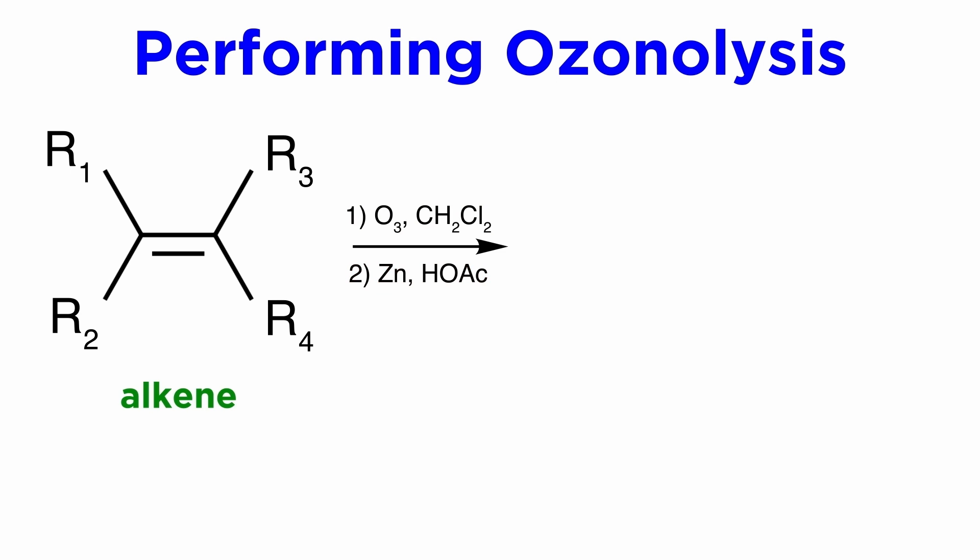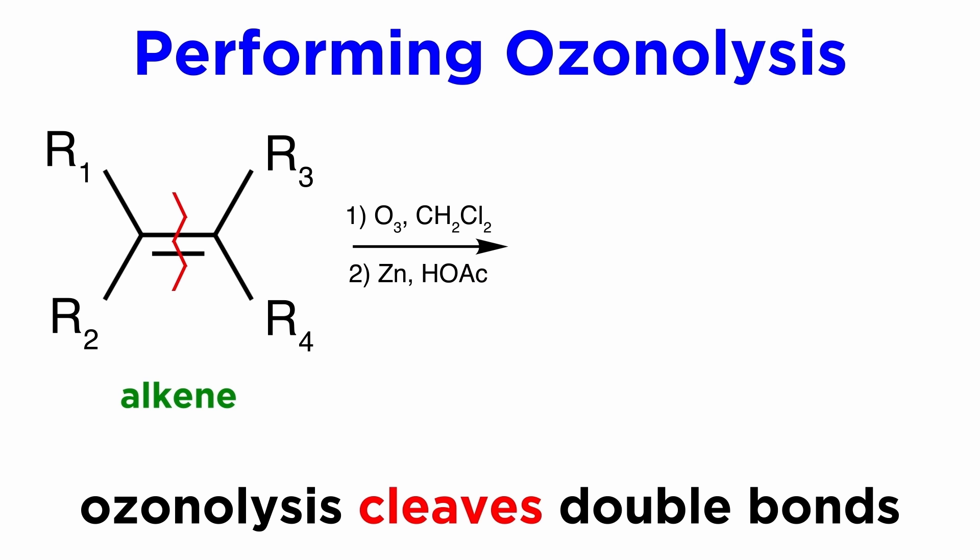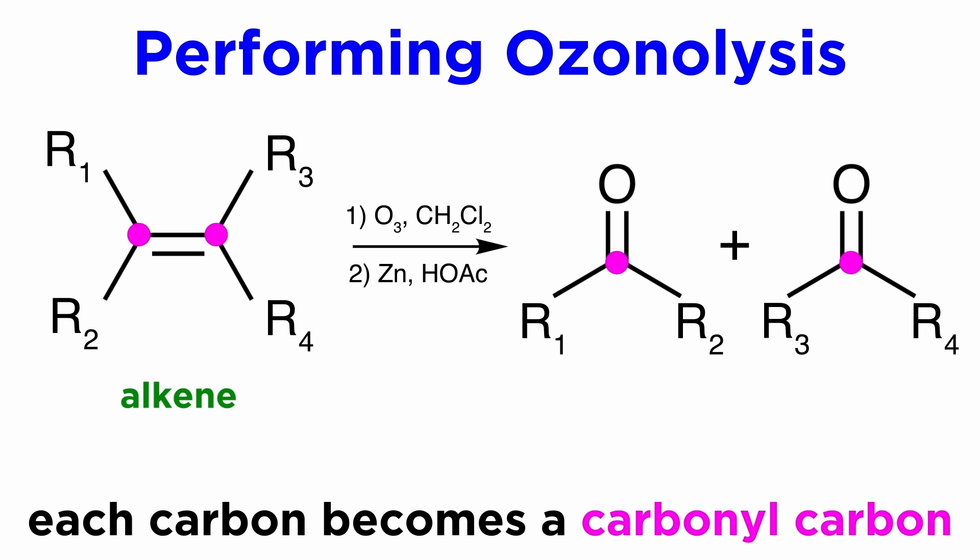Ozonolysis operates on alkenes, and it results in cleavage of the double bond. This means the two carbons get pulled apart, and then in this case each of them becomes a carbonyl carbon. So depending on the degree of substitution of the alkene, we could end up with aldehydes, or ketones, or one of each.